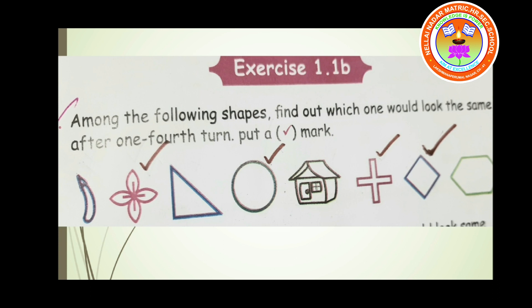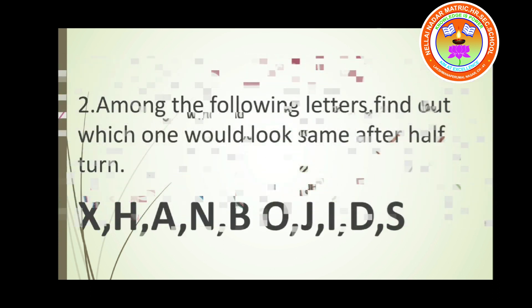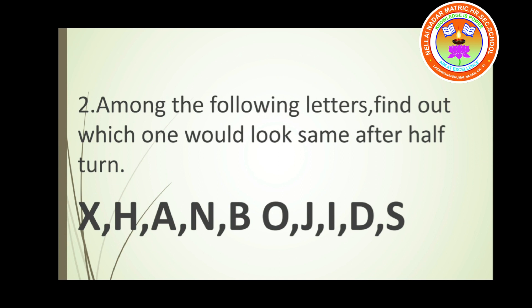Now let us move on to problem number two: among the following letters, find which one would look the same after a half turn. In the previous question we learned about one-fourth turn; now we are going to learn about the half turn. The letters given are X, H, A, N, B, O, J, I, T, and S. When a letter turns to half turn — that means rotated upside down — we have to find whether it looks the same or not.